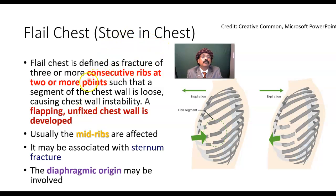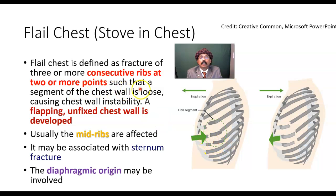What is the definition of flail chest? Flail chest is defined as fracture of three or more consecutive ribs at two or more points — so one, two, three ribs with more than one fracture each — such that a segment of the chest wall becomes loose and unstable.